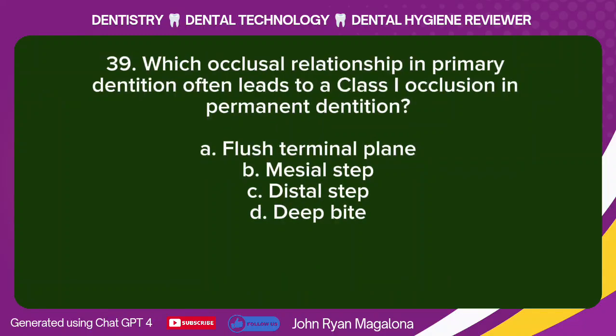Question 39: Which occlusal relationship in primary dentition often leads to a Class 1 occlusion in permanent dentition? A. Flush terminal plane. B. Mesial step. C. Distal step. D. Deep bite. Answer: B. Mesial step.